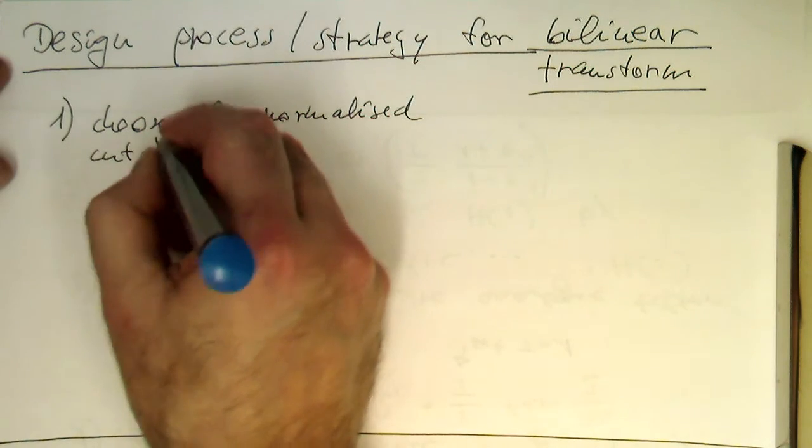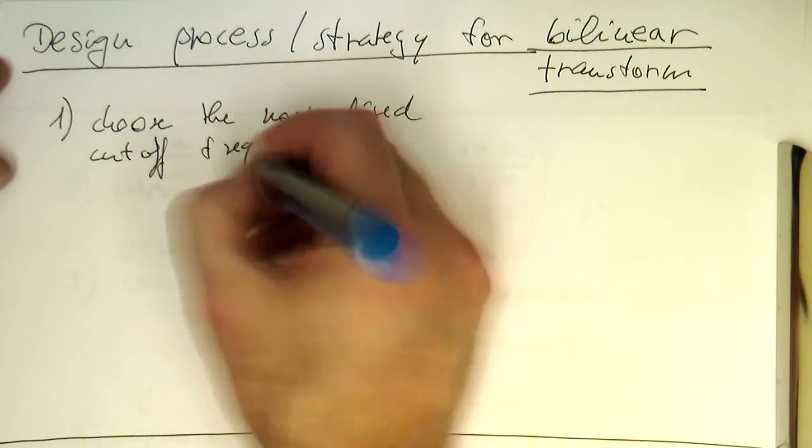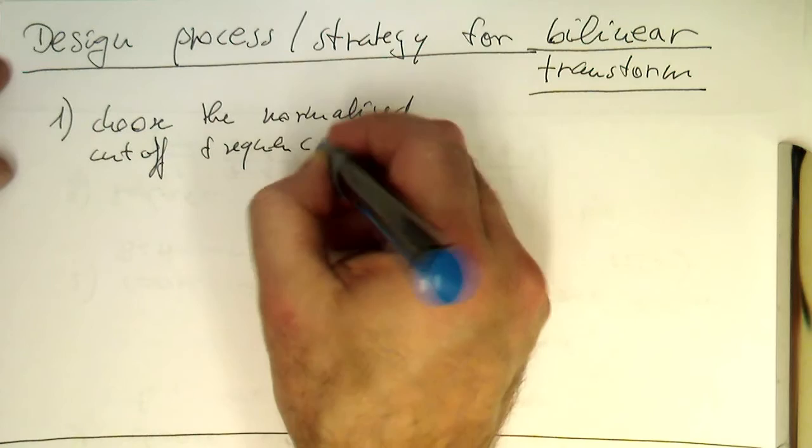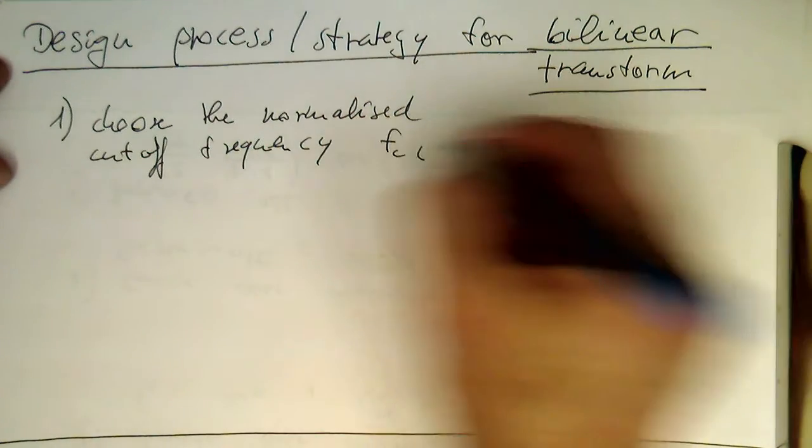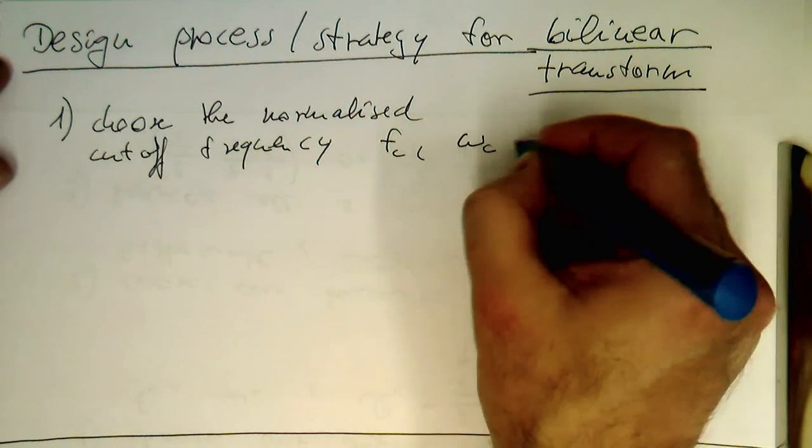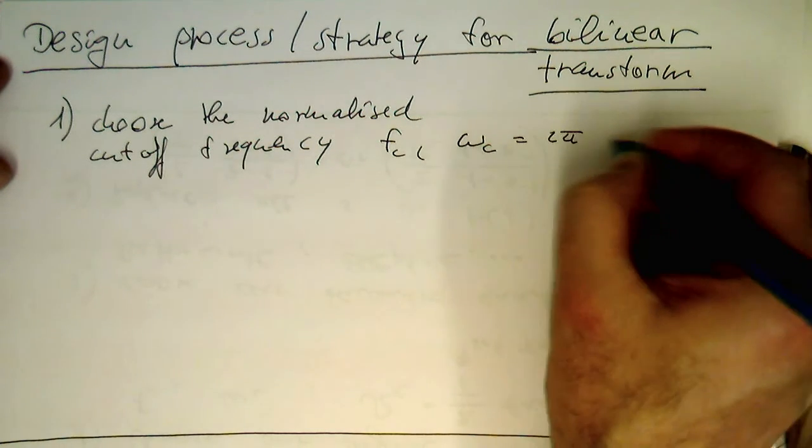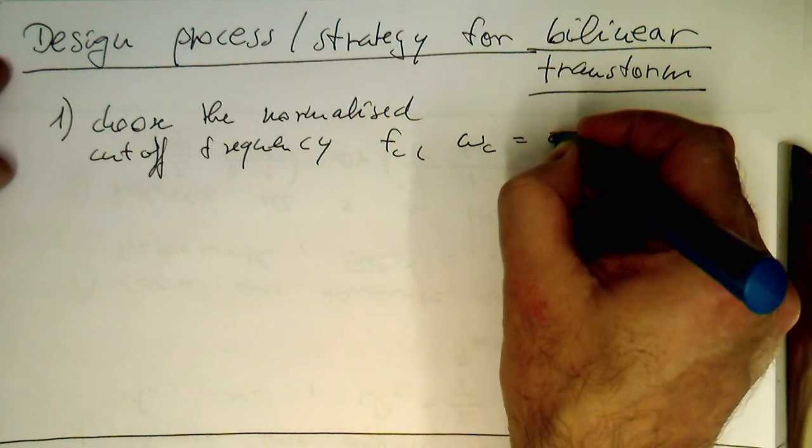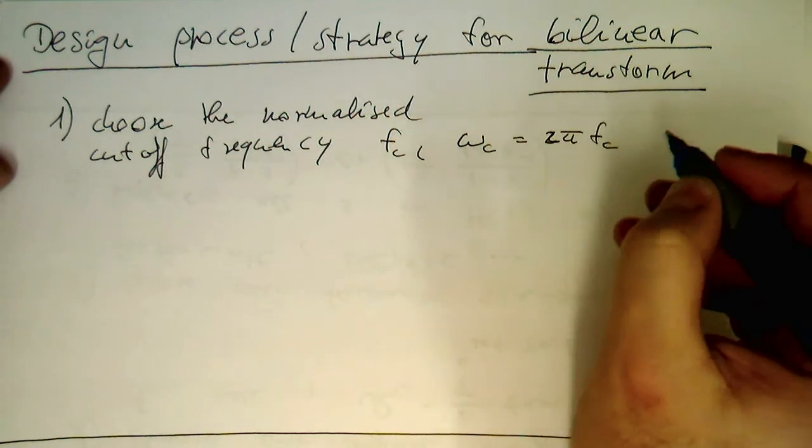So fc, and then this turns into small omega c equals 2 pi fc. So that's our normalized cutoff frequency.